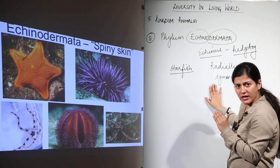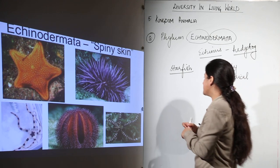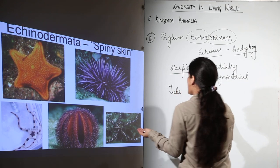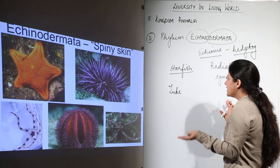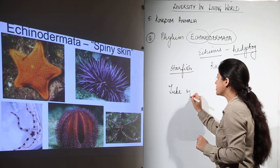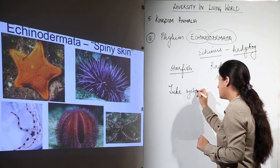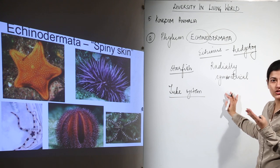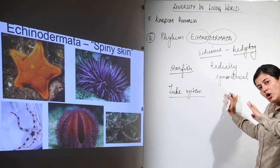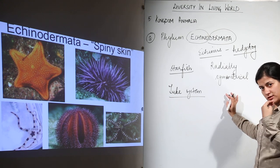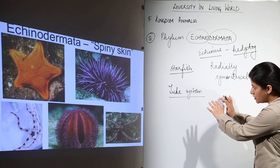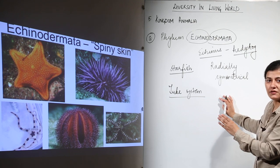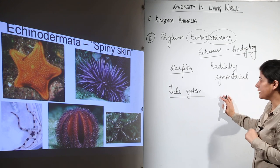Echinoderms would be triploblastic. They have a strange tube system which is present. Apart from other organ systems, this tube system is responsible for movement, excretion, digestion — all these activities are taken care of by the tube system. This is the characteristic, exclusive feature of this particular phylum.